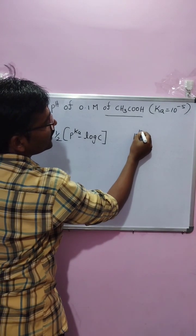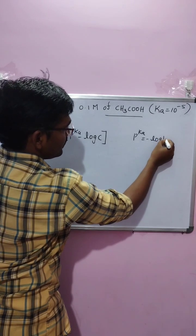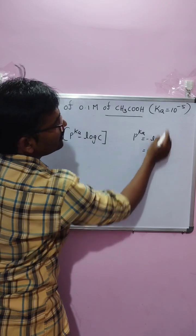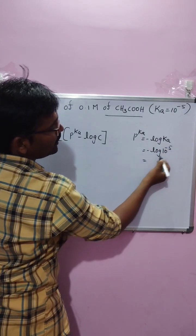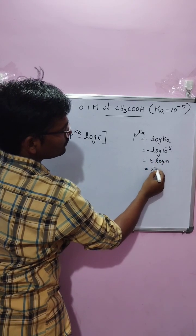First you have to find out the pKa. pKa equals to minus log Ka, equals to minus log 10 to the power of minus 5. Then you can get it is 5 log 10. Log 10 value is 1, that is why it's 5.